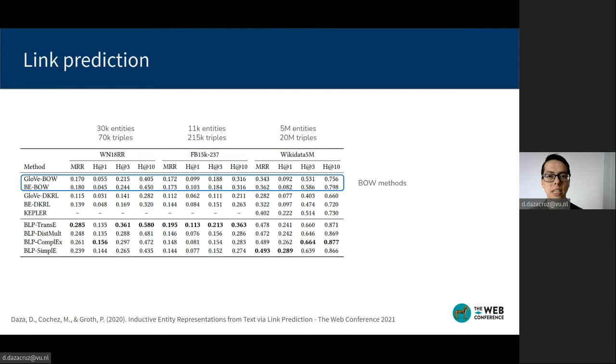As baselines, we consider bag of words methods that use GloVe and BERT embeddings for initialization, and then take the average of the embeddings, which discards word order. We also consider DKRL, which is a method that does take order into account by employing CNN, but it requires normalizing the input text and removing stop words.